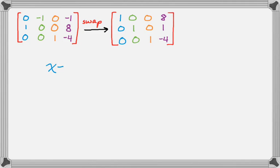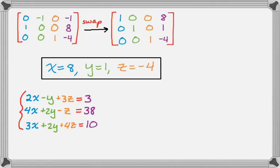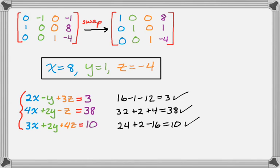So now I know the solution to the system. If everything went well, which it honestly might not have because this process involves a lot of adding and subtracting. So I get this, so I should check it. So this is the system that I was solving using this process. And what I want to do is just plug in the values. So I get 16 minus 1 minus 12 is 3. 32 plus 2 plus 4 is 38. And 24 plus 2 minus 16 is 10. Okay?